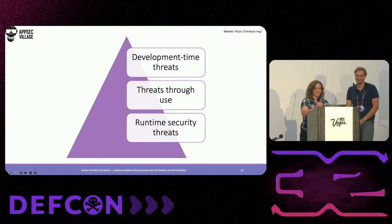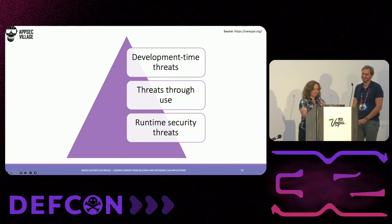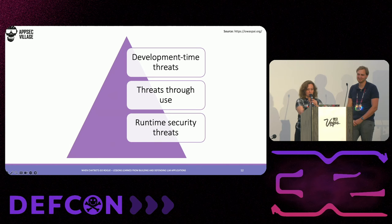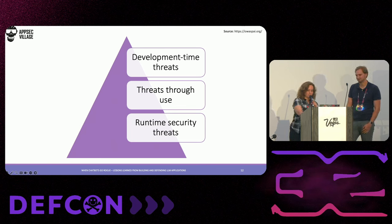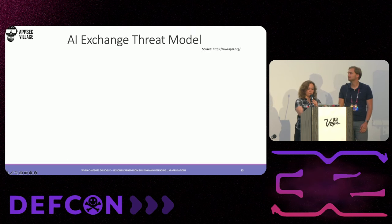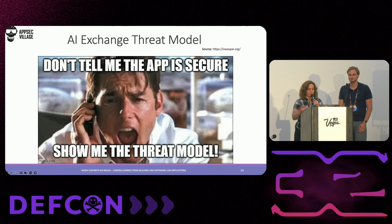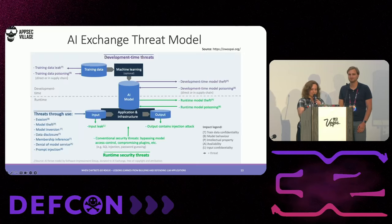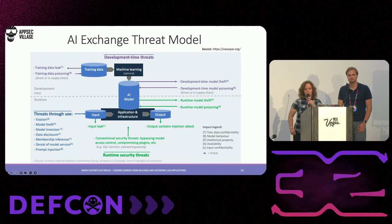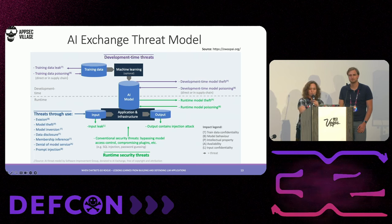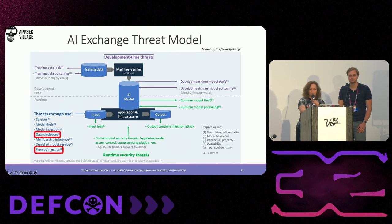To get to the serious stuff, I'd like to briefly introduce threat modeling in the specific context of LLM-integrated apps. There are three main types of threats: development ones, threats through use, and runtime threats — all of which make up the AI Exchange threat model. The OWASP AI Exchange has open-sourced the global discussion on AI security. Today, we'll only focus on data disclosure and prompt injection.